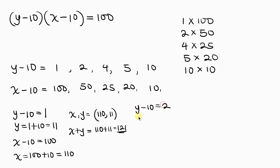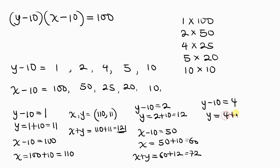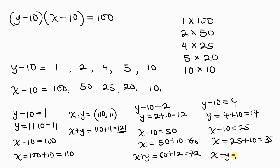For the second factor pair: y minus 10 = 2 gives y = 12, and x minus 10 = 50 gives x = 60. So x plus y = 60 + 12 = 72. For the third pair: y minus 10 = 4 gives y = 14, and x minus 10 = 25 gives x = 35. So x plus y = 35 + 14 = 49.